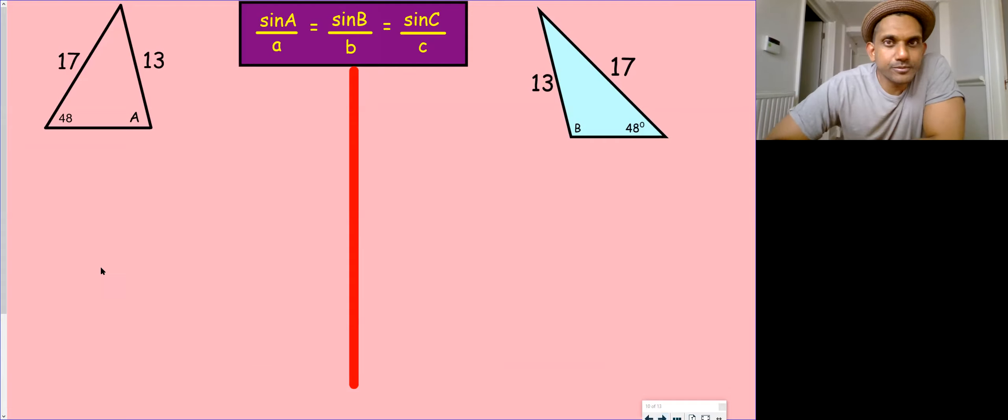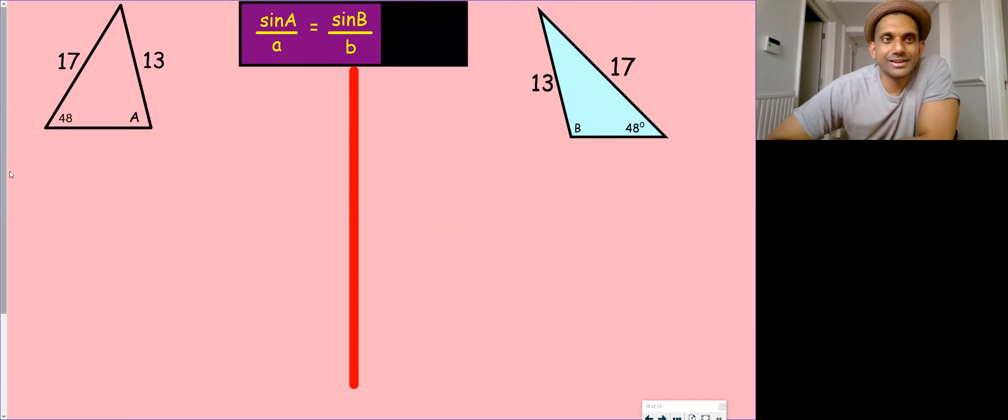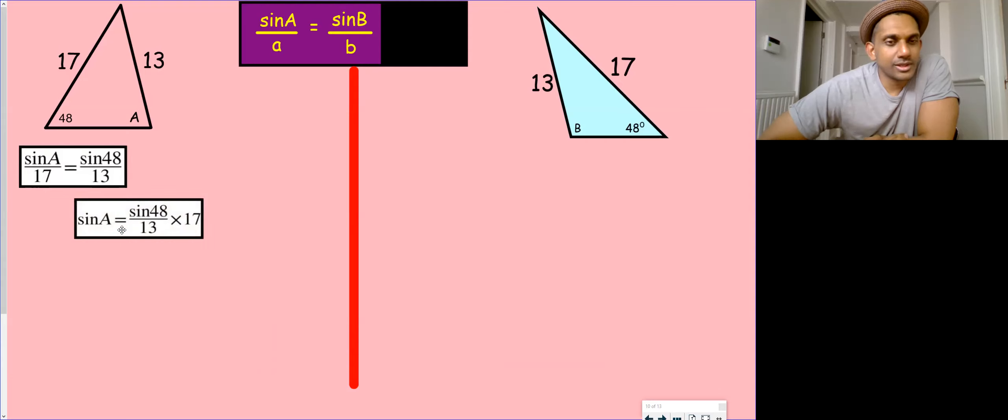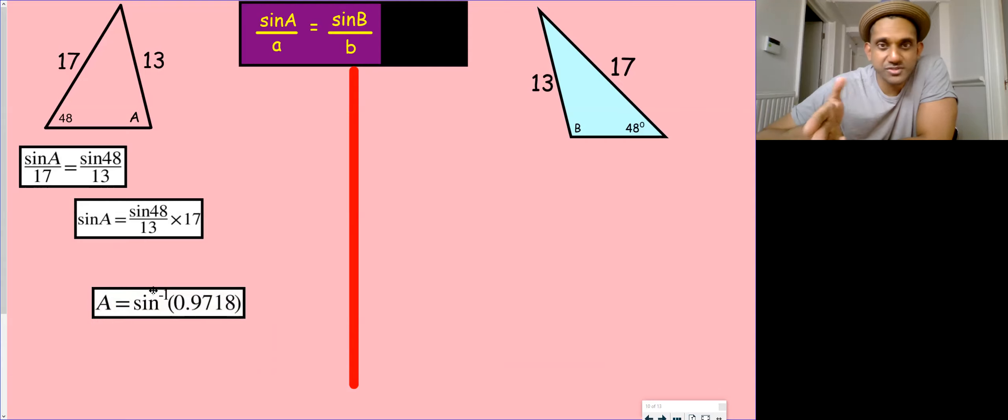So, I'm not going to use that bit of the formula. So we have sine A over 17 equals sine 48 over 13. We then times by 17, and that gives us this, and we press shift sine to get the answer.